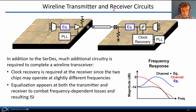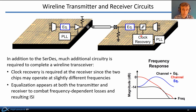For example, these two chips may operate at totally different internal clock frequencies, so the receiver needs to perform some clock recovery to comprehend the sampling times of the received waveform.